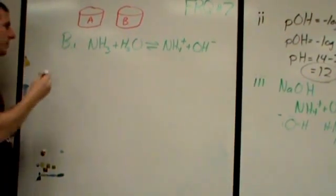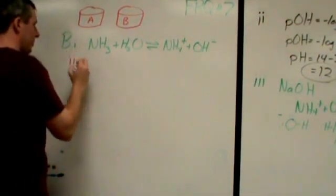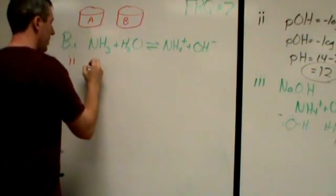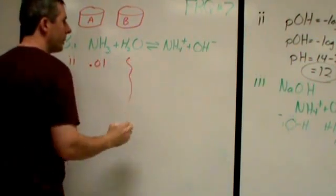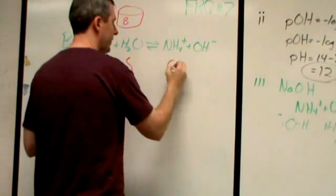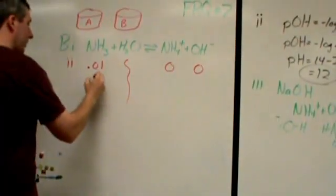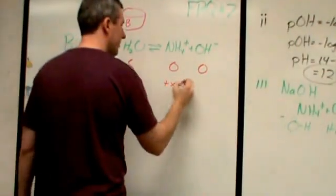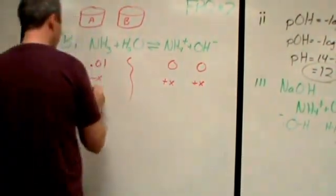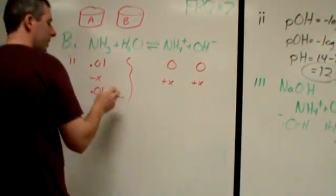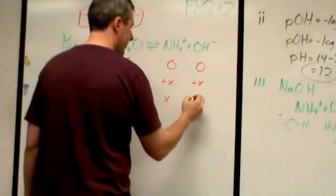Then in part two, it says what's the pH of this 0.01 molar solution. So, I have 0.01 to begin. I don't care about my water. It's a liquid. I have none of this. And I have none of this. I lose X. I gain X. I gain X. So, at equilibrium. Now, I'm going to ignore this minus X. I'm going to say it's 0.01. And I have X. And I have X.